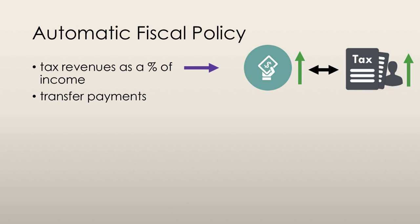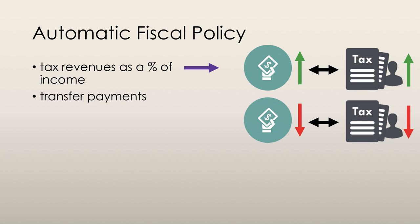During an expansion, people's incomes increase, thus they pay more taxes. In the same way, during a period of recession when people's income falls, they pay less taxes. The government doesn't intervene and change the tax rate for the population — this happens automatically. Keep in mind that the tax rate itself doesn't change, but the dollar amount that people pay in taxes does.